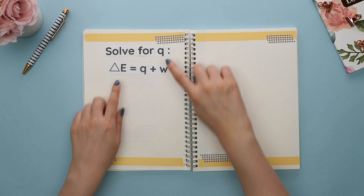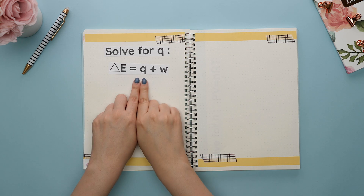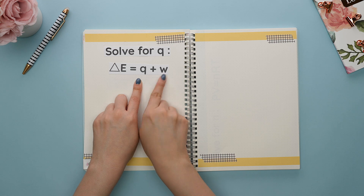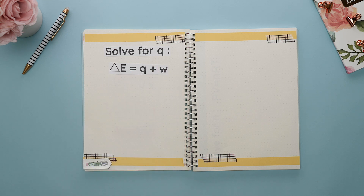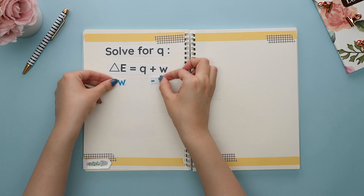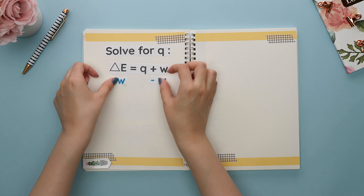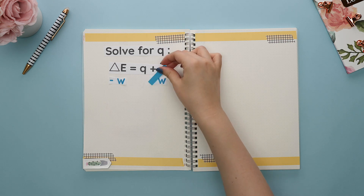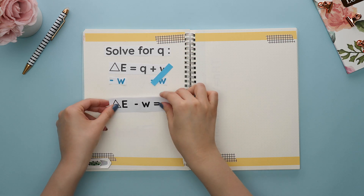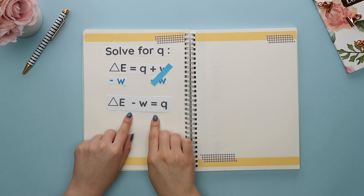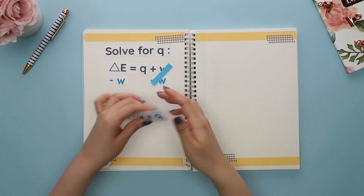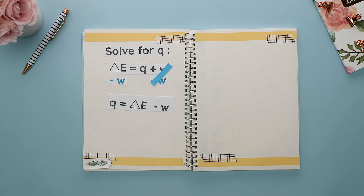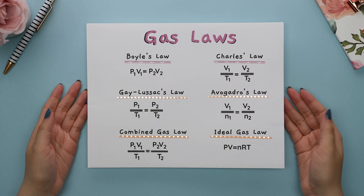Onto the examples. This is a formula you'll see in thermochemistry. We're asked to solve for q. Since we want q to be by itself, we need to move w to the opposite side by subtracting w from both sides. The w's cancel out, and we can flip this around to show q equals this expression.